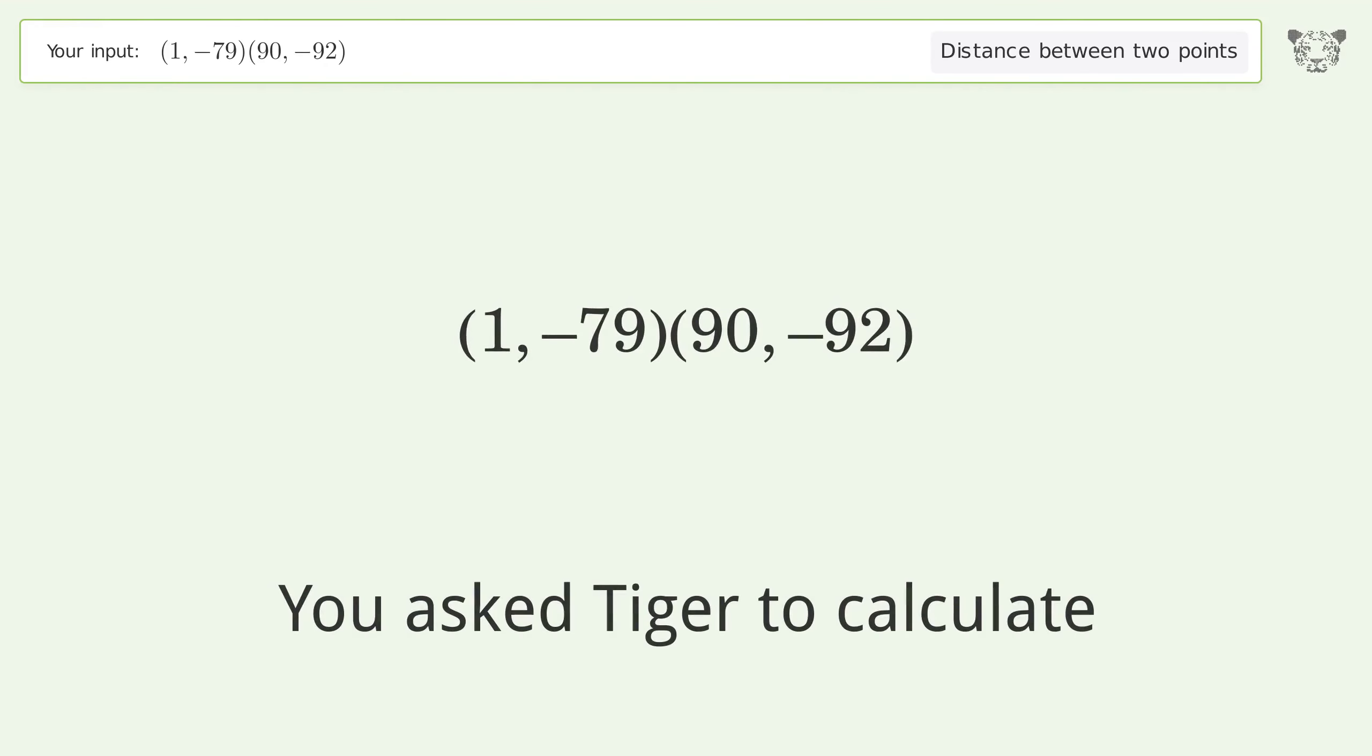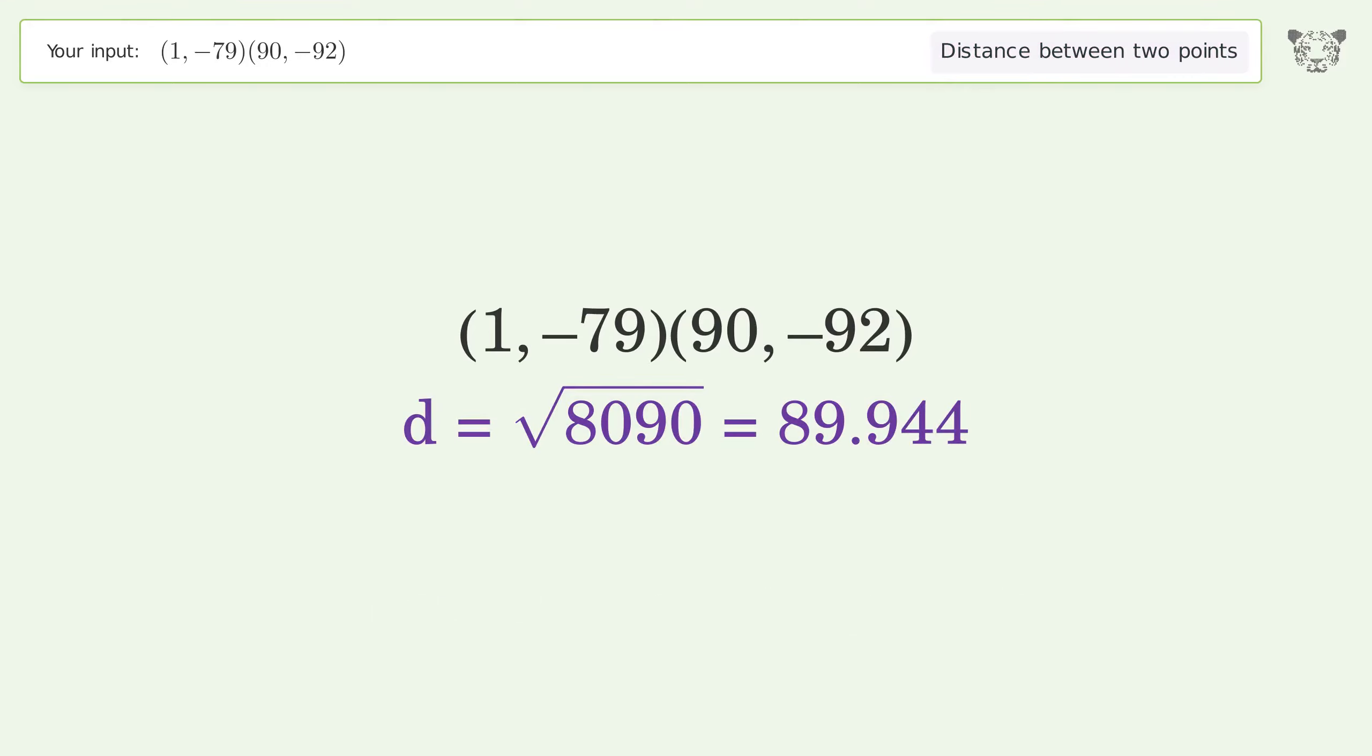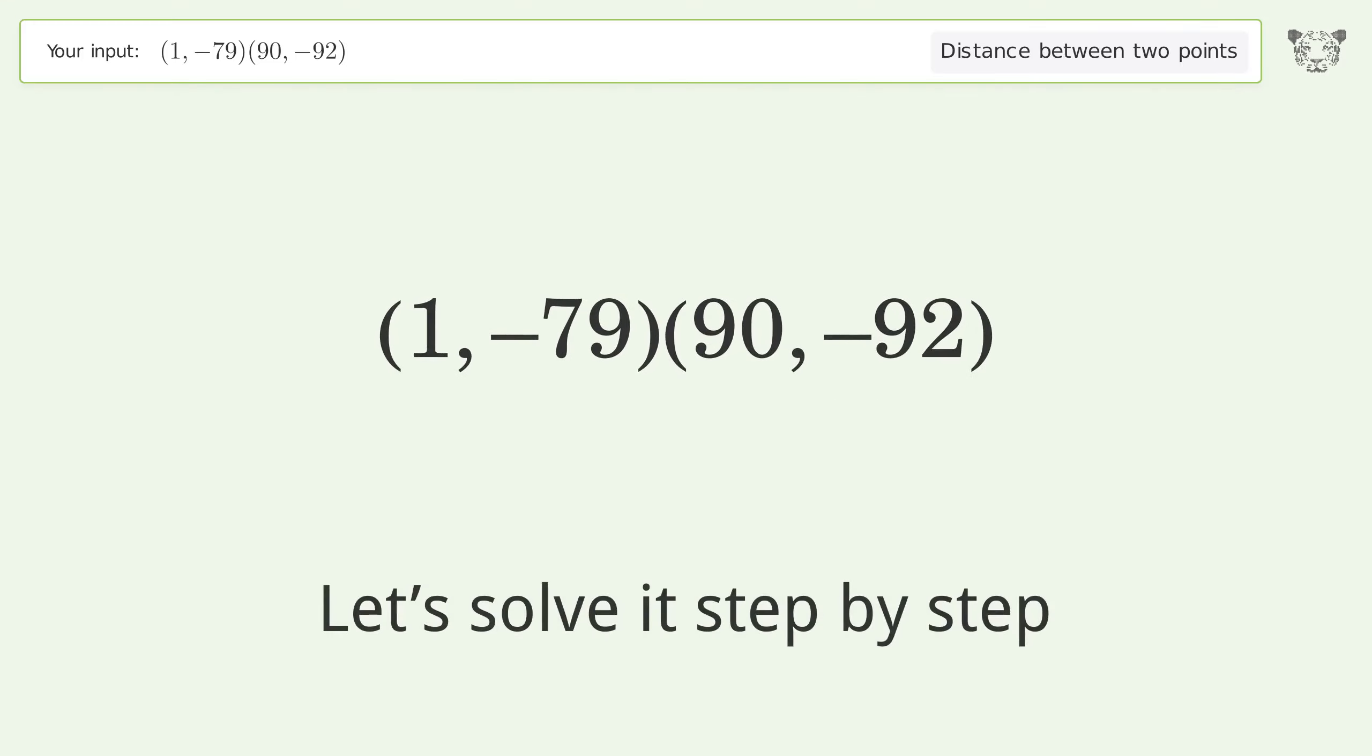You asked Tiger to calculate this. This deals with the distance between two points. The distance between the two points is the square root of 8090, or 89.944. Let's solve it step by step.